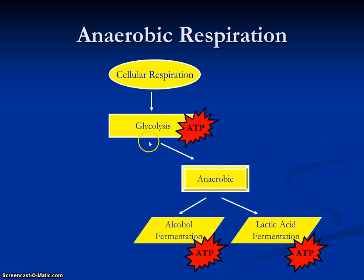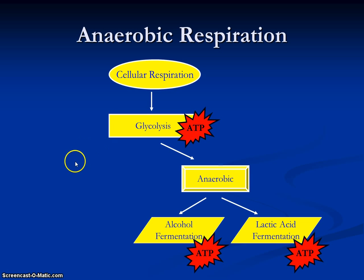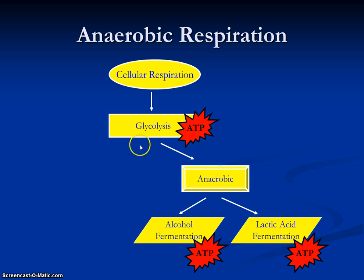Then we start looking at either the aerobic pathway or the anaerobic pathway. The aerobic pathway, which is what we just looked at, is going to require oxygen. That's where most of the ATP is going to be produced. Both aerobic and anaerobic are going to occur in the mitochondria within the cell.